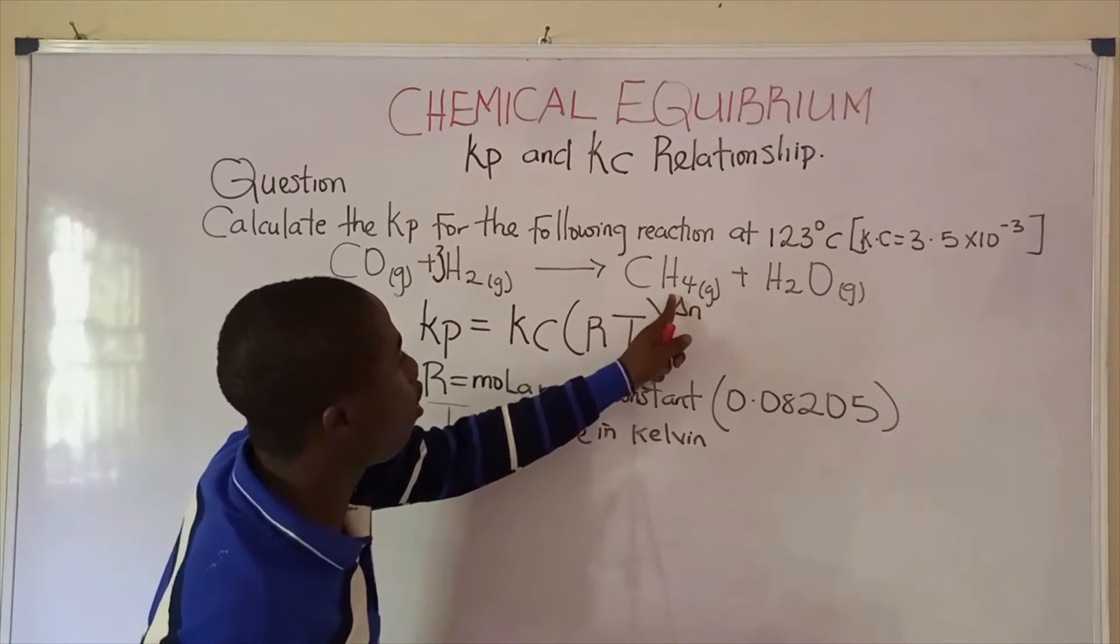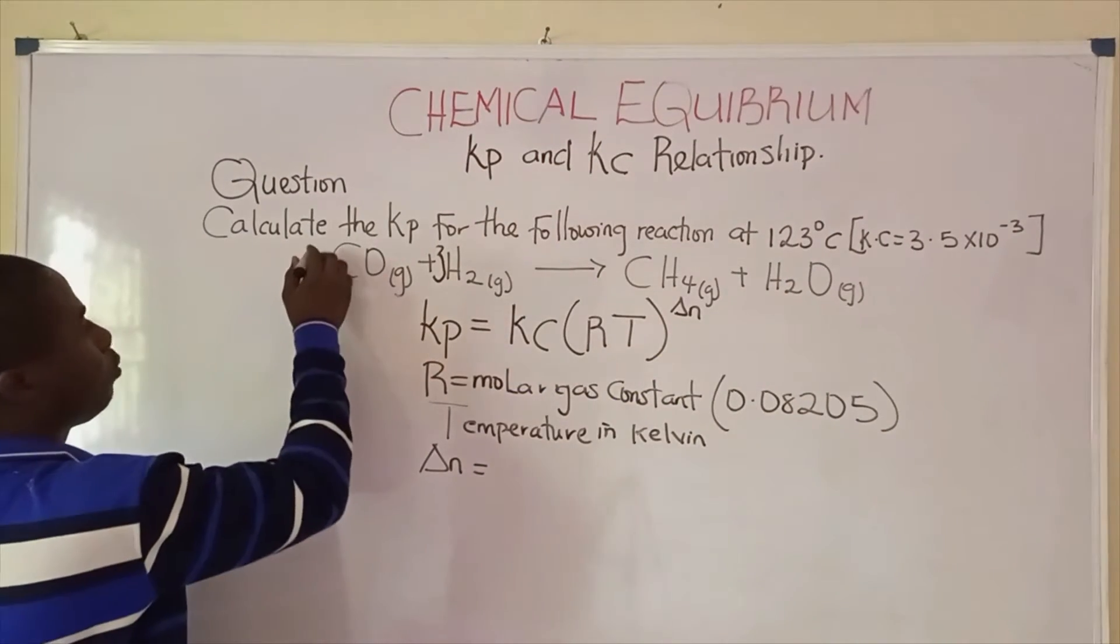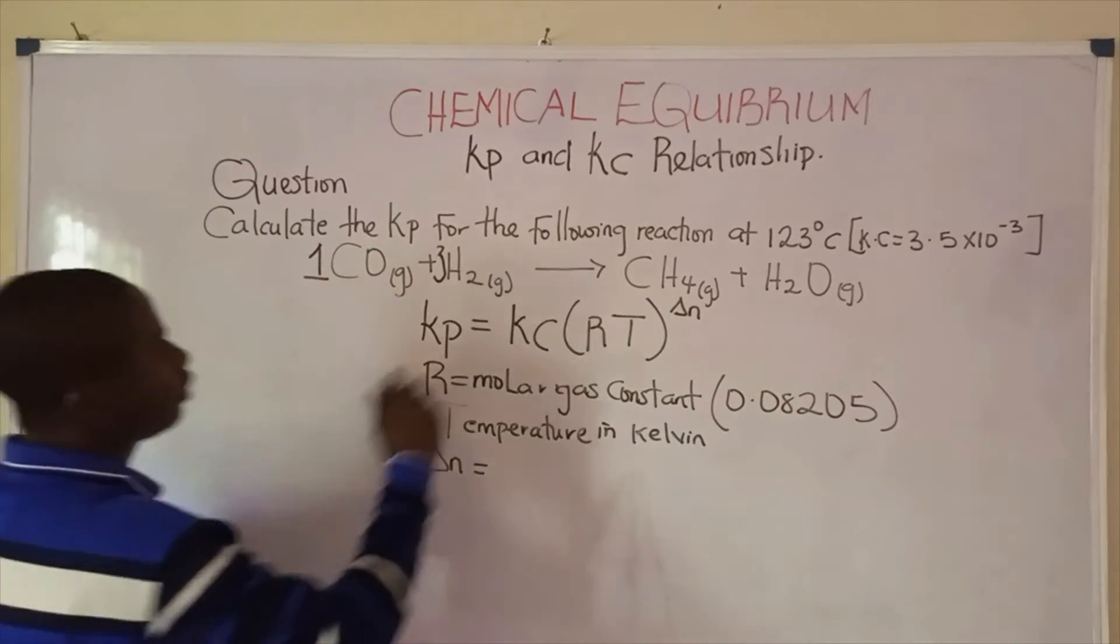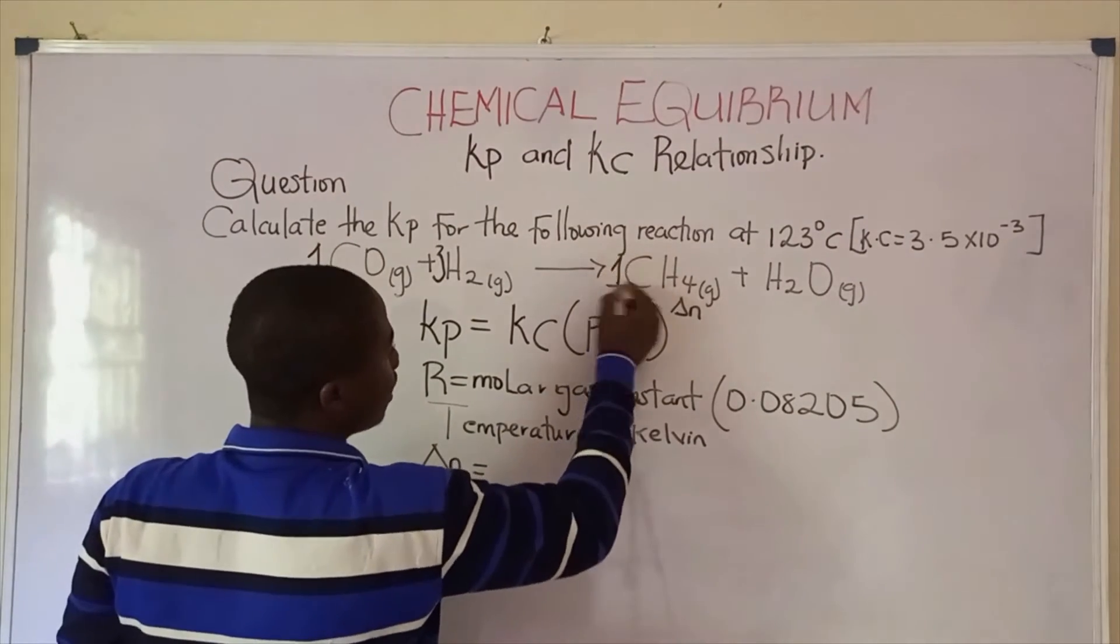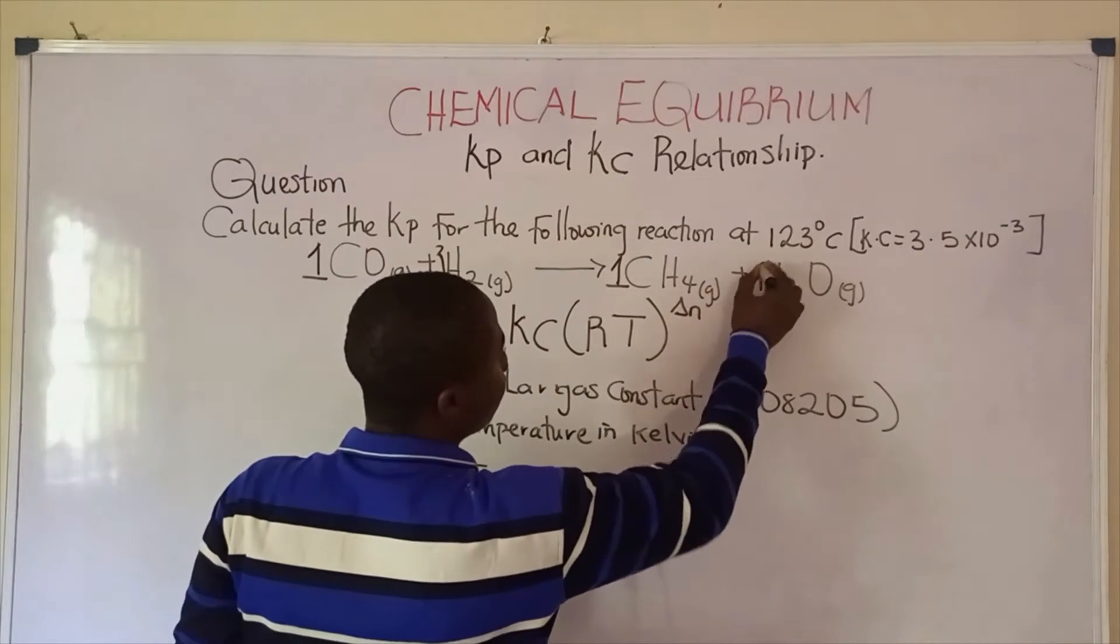Here it becomes 4 plus 2, that is 6. And here we put 1 mole, and also we still put 1 mole here, and also here 1 mole.